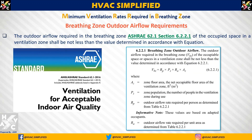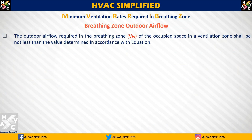जिस section में 6.2.1 जो कि breathable zone outdoor airflow का section है, वहाँ पर यह equation आप देख सकते हैं: VBZ equal to RP multiplied by PZ plus RA multiplied by AZ. आएए मैं आपको इसे detail में समझाता हूँ। इस equation को किस प्रकार से यूज़ किया जाता है, यह बिल्कुल easy equation है। मैंने आपको already part 1 and part 2 में CFM per person और CFM per square feet के बारे में समझाया है। अब हम यहाँ पर एक example के द्वारा detail में देखेंगे।